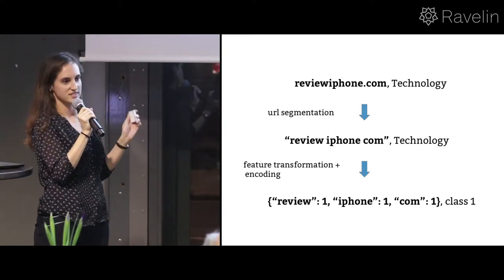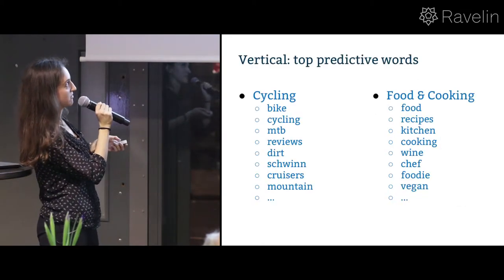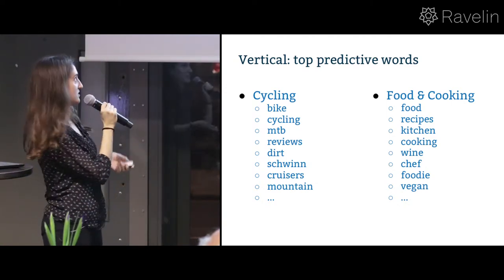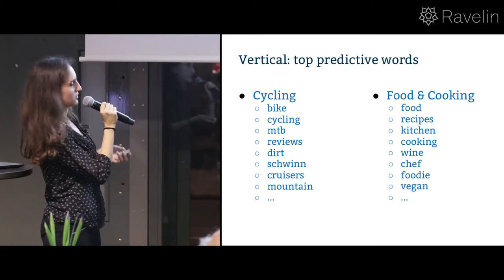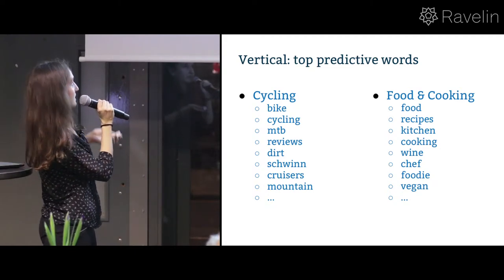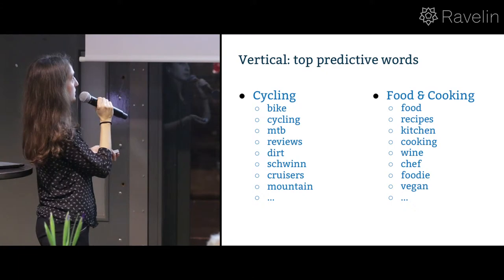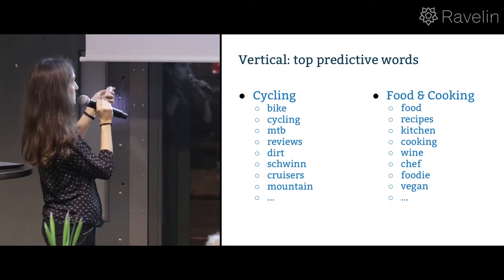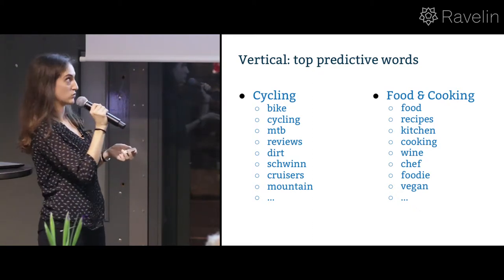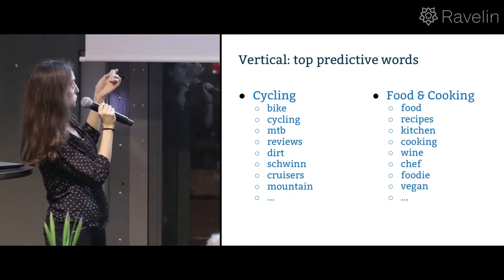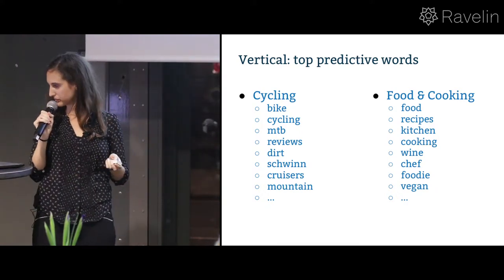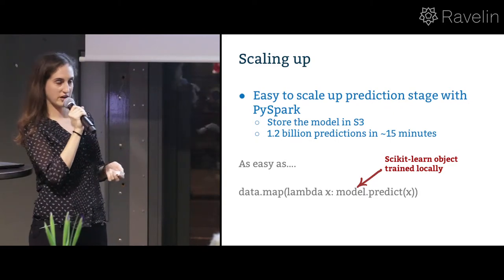To give a concrete example, we train a model that maps a domain to a vertical — what category that domain belongs to — using very standard NLP algorithms. We segment the domain, do feature encoding, extract words, and find the right coefficients. The results are unsurprising: for cycling you see words like 'cycling', 'bike', and 'mountain' (from mountain bikes); for food and cooking you see food-related words. So once you have your model and you're happy with it, what can you do with it?